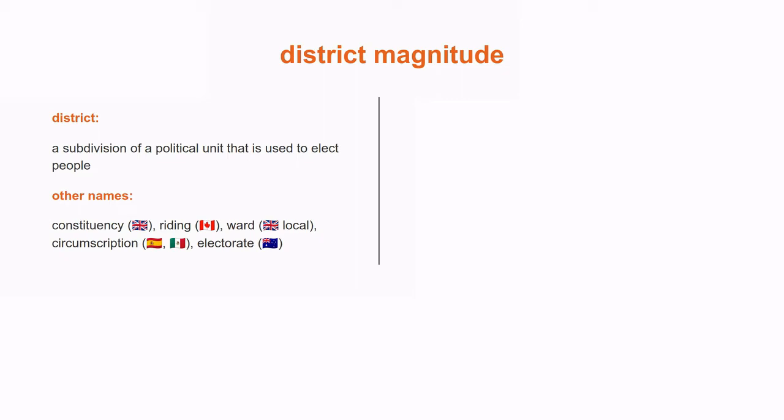The magnitude of a district is the number of individuals elected from each district. We use the word magnitude rather than size, because if we talk about district size, people might think we're talking about the area covered by the district.